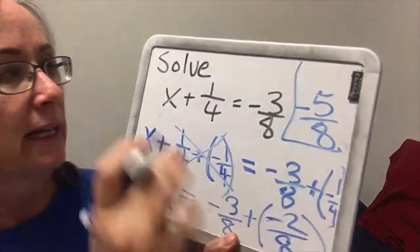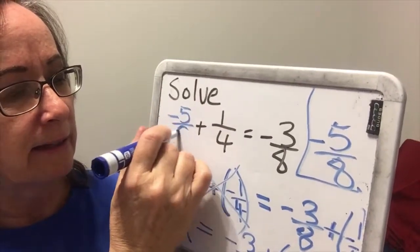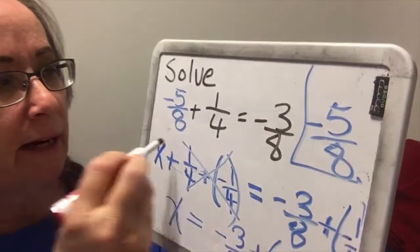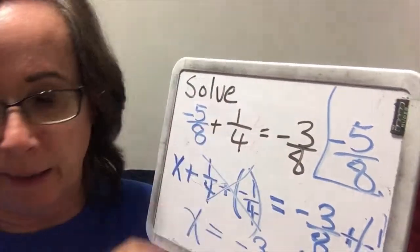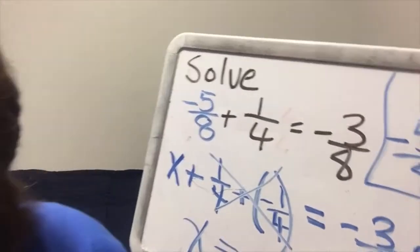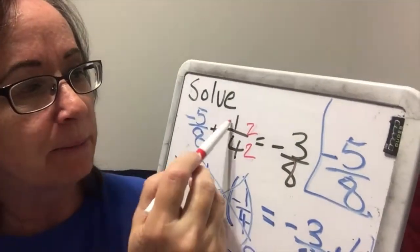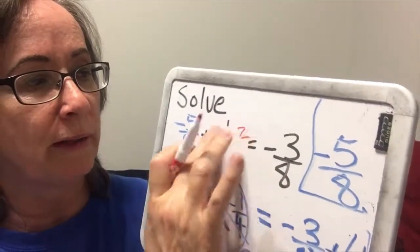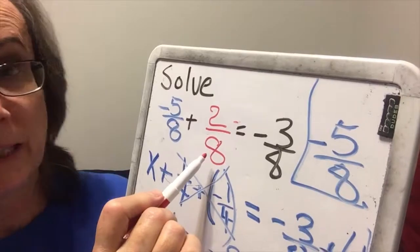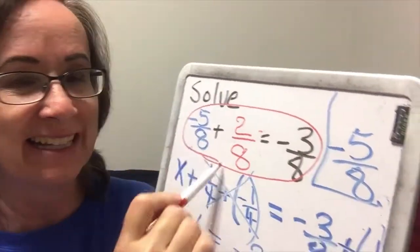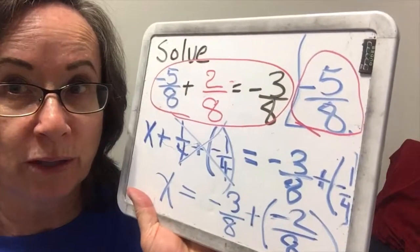Let's check that out by plugging in negative 5 eighths for x. We have eighths and eighths, so we need to turn 1 fourth into eighths — multiply top and bottom by 2 to get 2 eighths. So is negative 5 eighths plus 2 eighths equal to negative 3 eighths? Yes, it is. That is a true statement. Therefore, negative 5 eighths is a solution or root of the original equation.